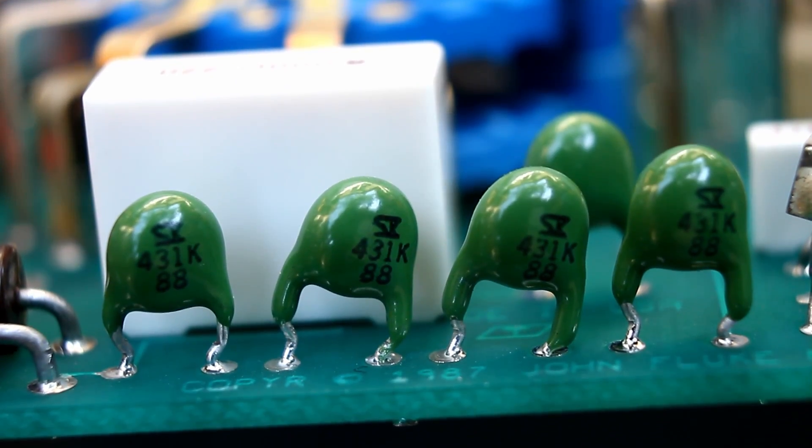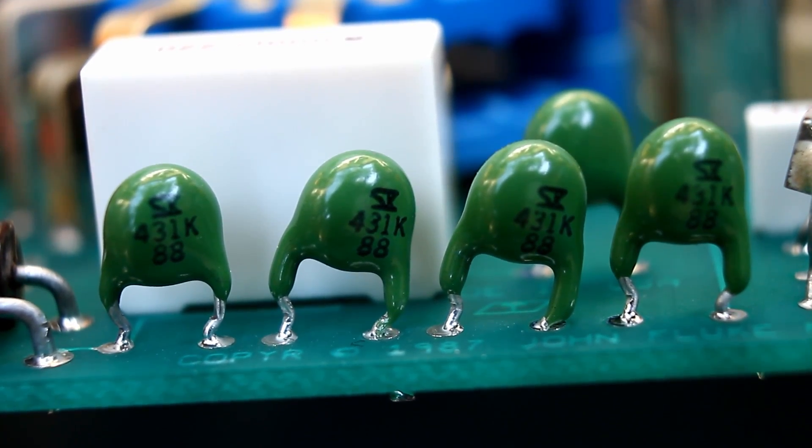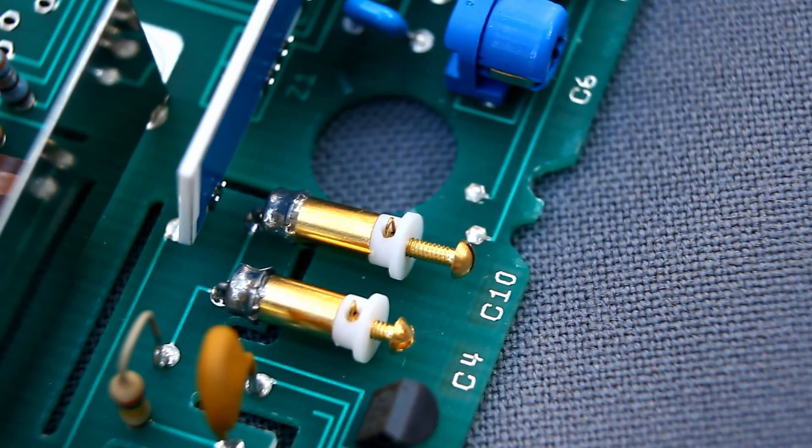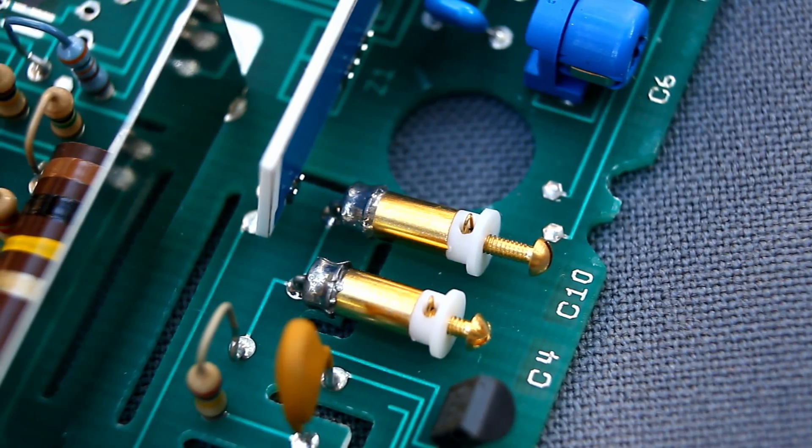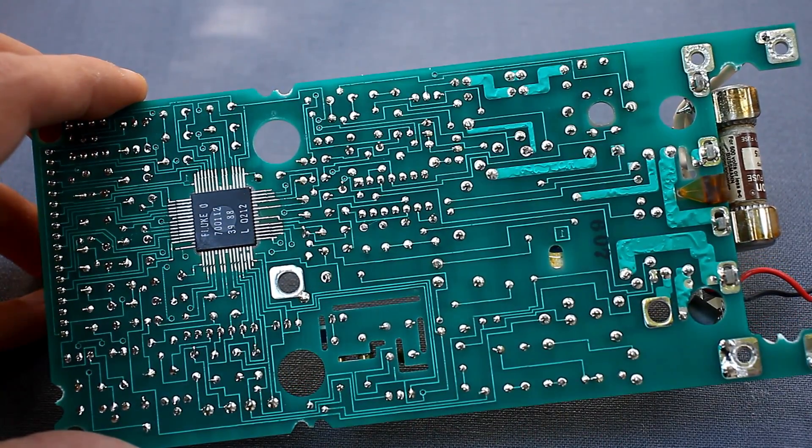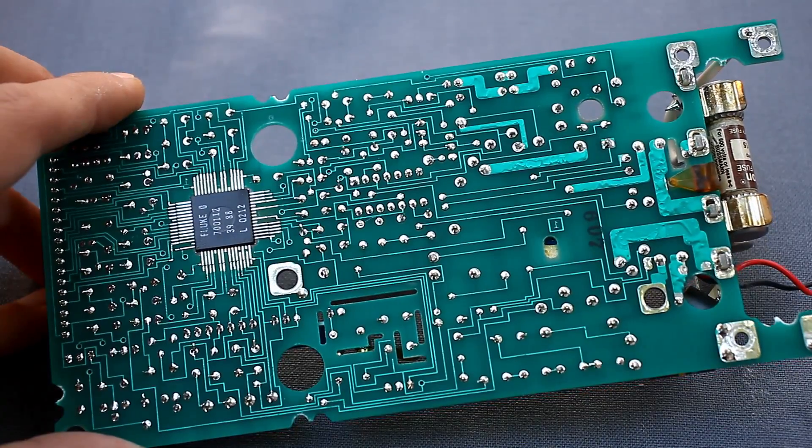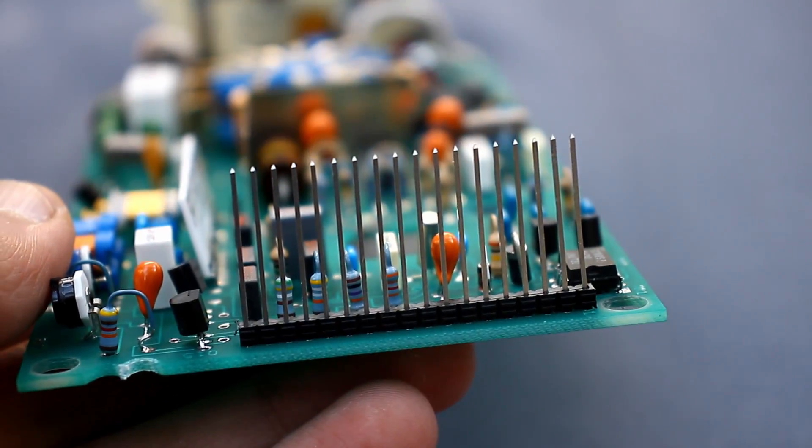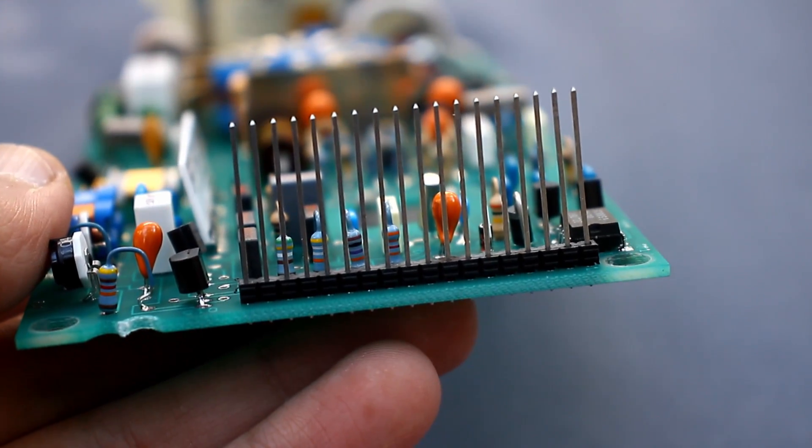The input circuits of the multimeter have serious protection, everything in the spirit of Fluke. In some places, you can see the milling of the board. This is necessary to provide an air gap in order to avoid spark breakdown. Highly stable and accurate resistors of 150 and even 20 ppm can be seen on the board.